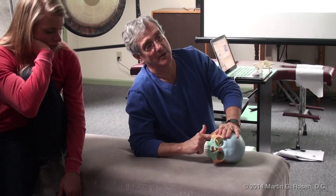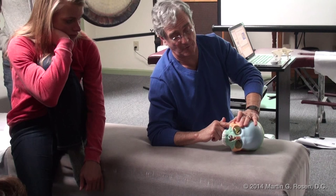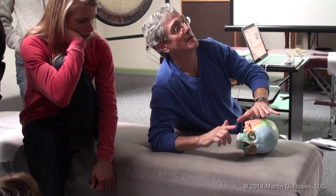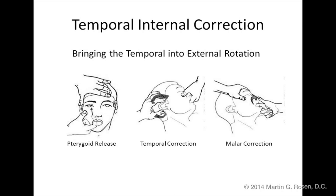I then release the pterygoid process and come back onto the zygomatic arch. Every single time, regardless of the side you're on, when you want to correct the zygomatic position — because the zygomatic arch attaches directly to the temporal bone — on inhalation you rotate the zygomatic fossa to the left side of the cranium while rotating internally. It locks it in, then you relax your contact. Three steps: release, correct, and set.